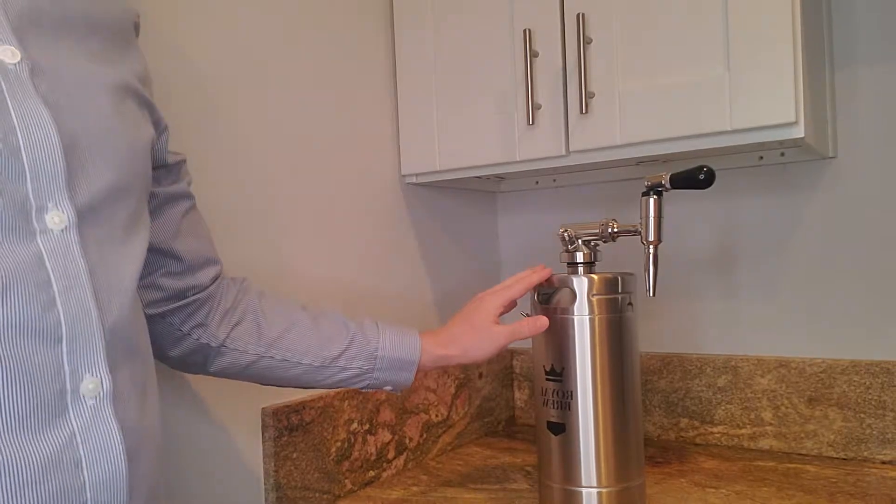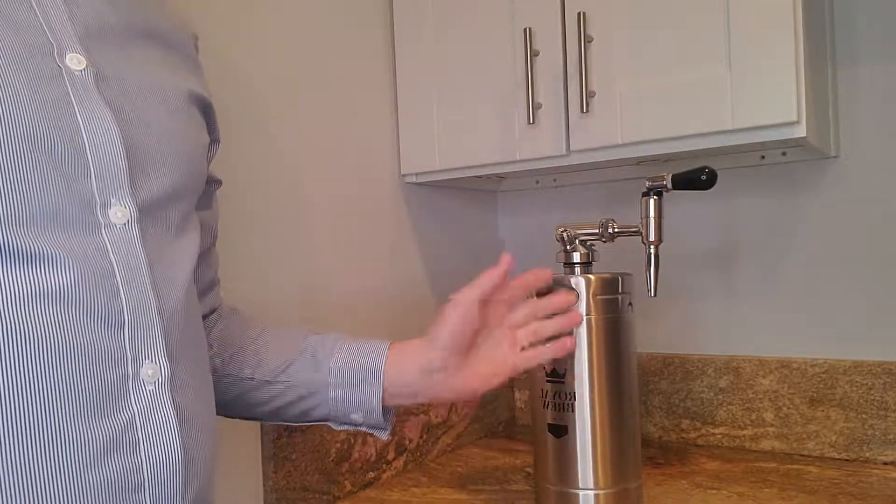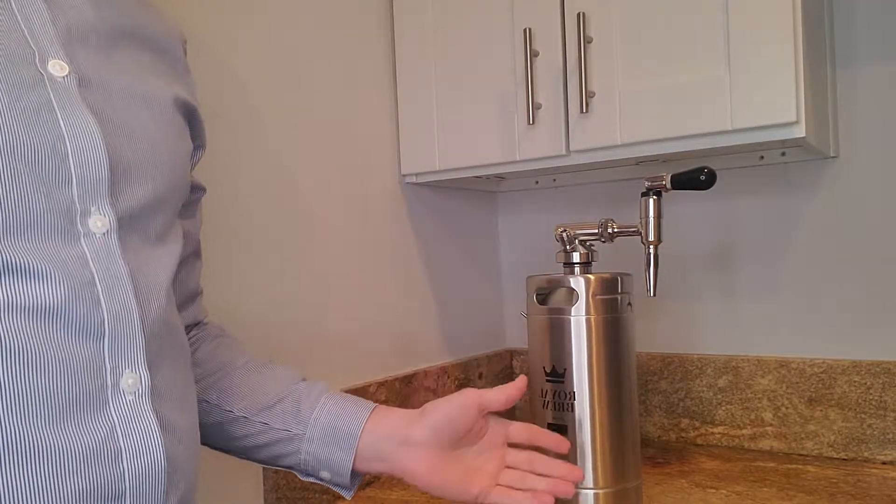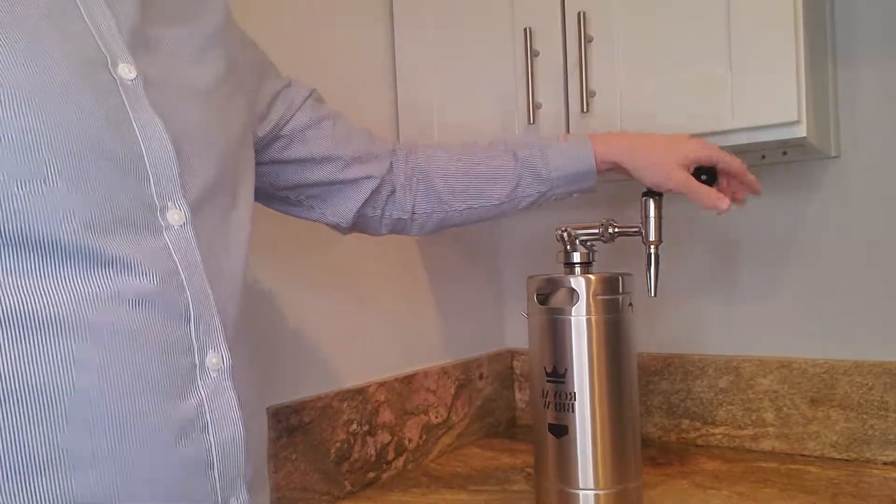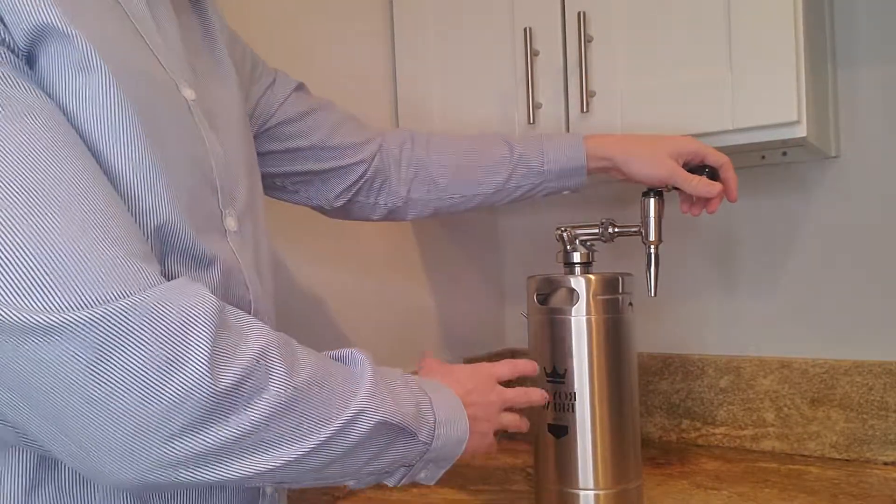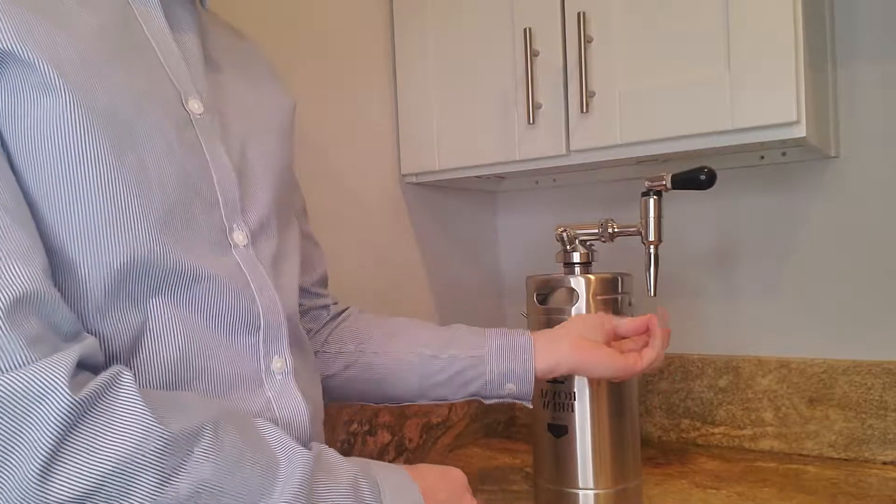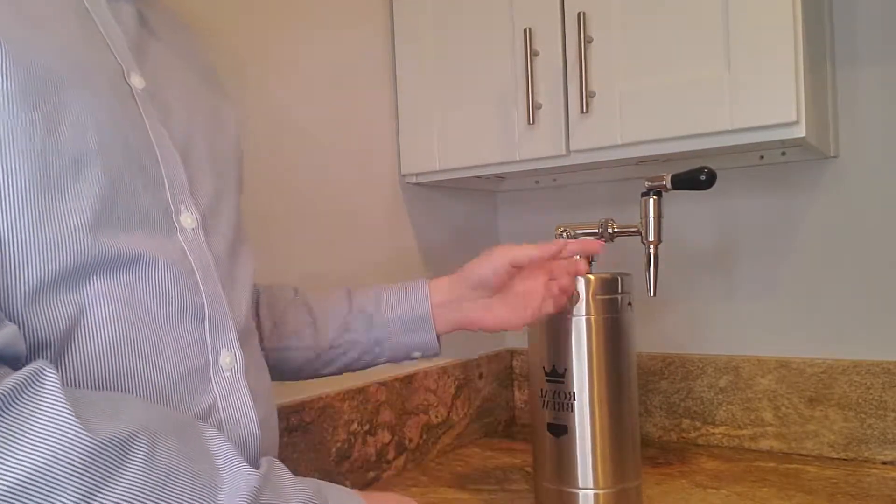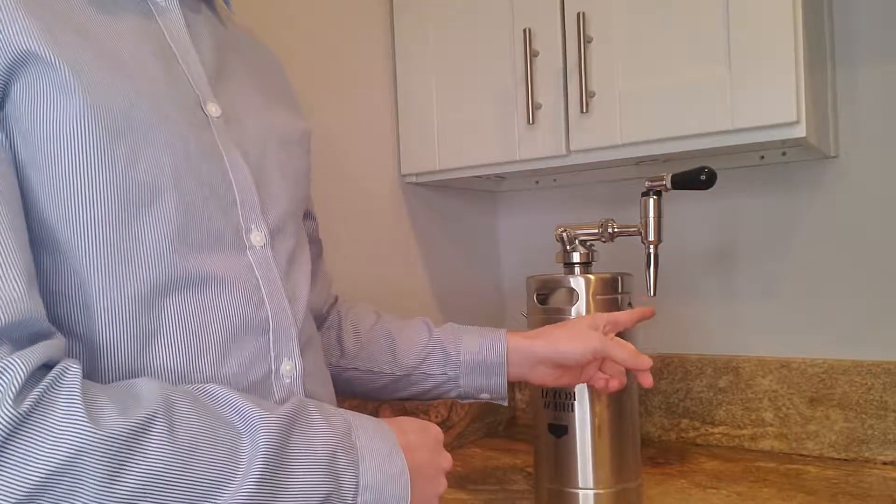Now this is an empty keg, so this is just for demonstration purposes. But if you can see, if this was a full keg and it had the knob turned out and nothing is flowing out, that means there's probably a clog here in the faucet tip.